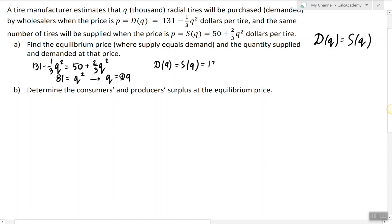So plugging in 9 into the demand equation will give us 104. We can verify this by plugging in 9 into the supply equation. So 50 plus 54 is also 104.